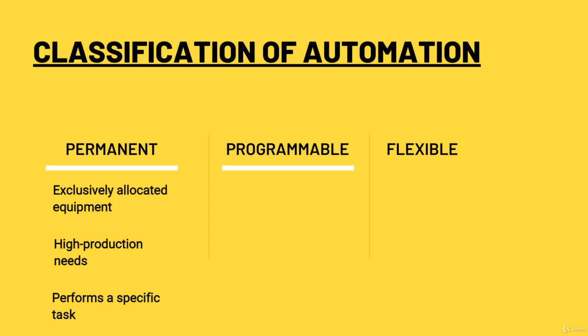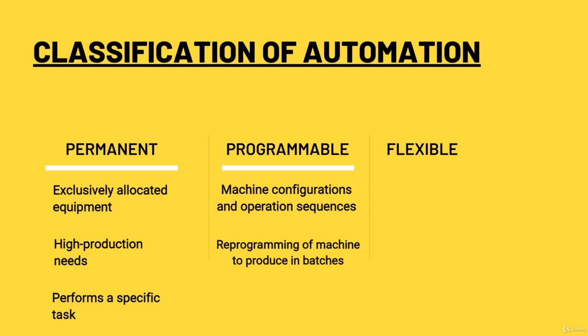Programmable automation allows for machine configurations and operation sequences that can change based on signals sent from the electronic controls. With a programmable automation system, products can be produced in batches through the reprogramming of machine operations and sequences.